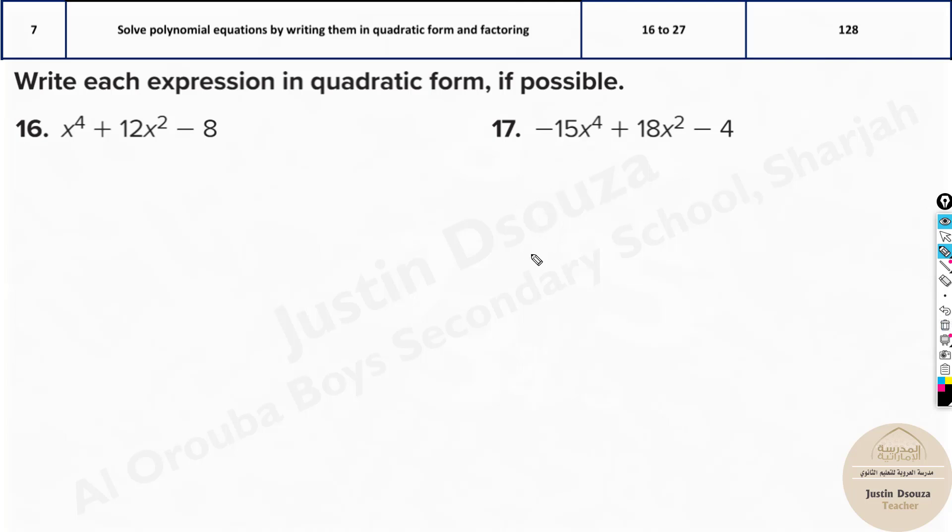I'll clear this off. Now over here, u is x², u² will be x⁴. So it's -15x⁴ becomes u², okay? And then plus 18u minus 4. This is the first step.